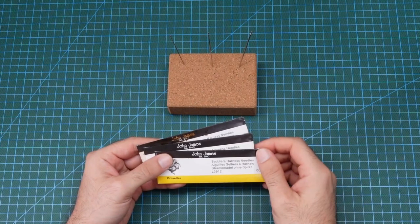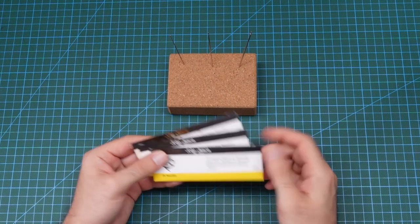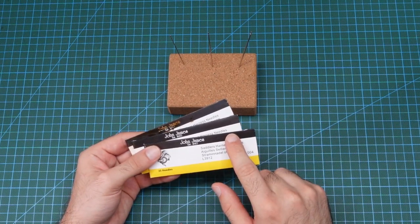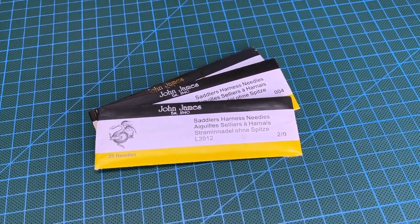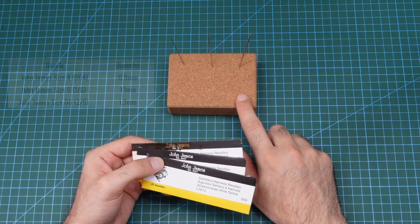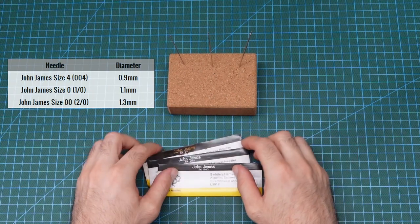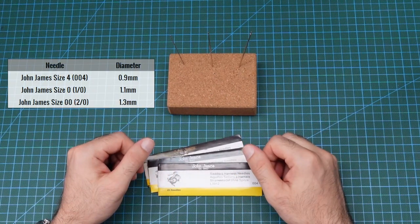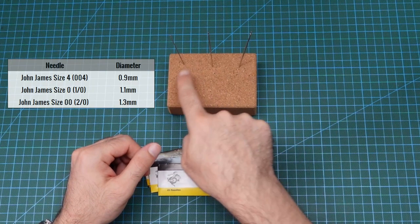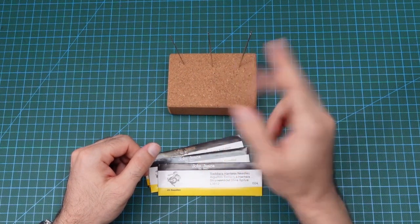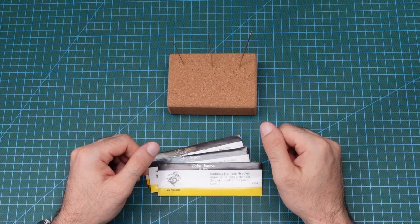The most common leather needle brand that is used are these John James harness needles. John James have a range of sizes and I have three of the smaller size needles that they make here. Each have different lengths but it's the thickness that we care most about, and even though they only vary 0.1 mm per size it does make a big difference when stitching.